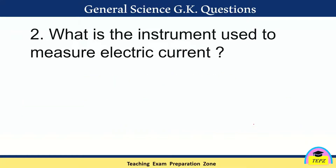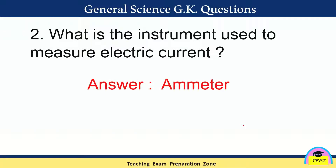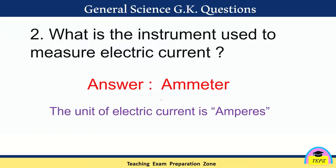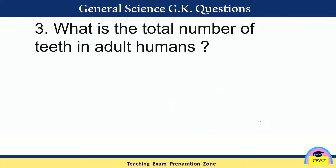What is the instrument used to measure electric current? The answer is ammeter. If you are asked about the unit of electric current, it is amperes — the unit of electric current is amperes.